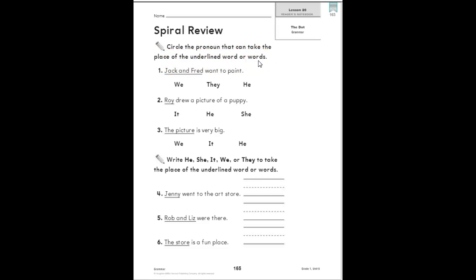So Jack and Fred want to paint. We, they, or he - which word could take the place of the underlined nouns? Right, the pronoun they, so you would circle they. You're going to do the same thing for two and three.